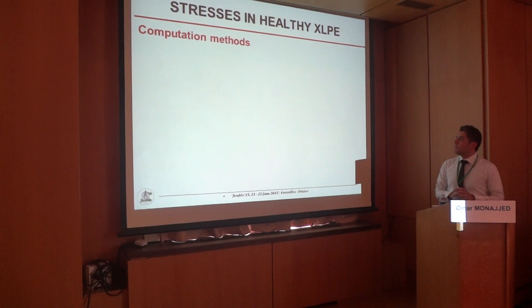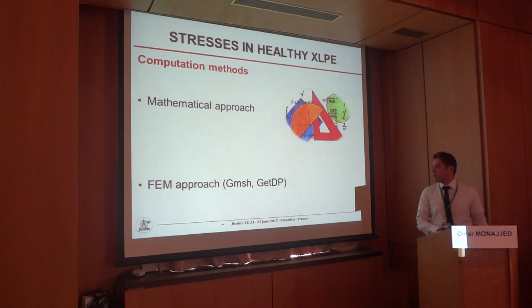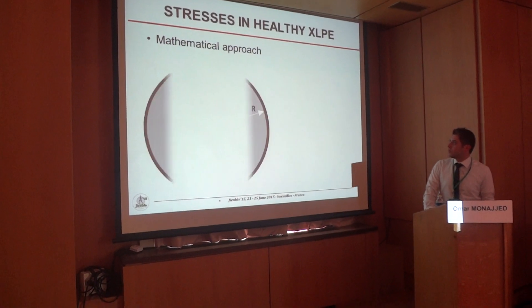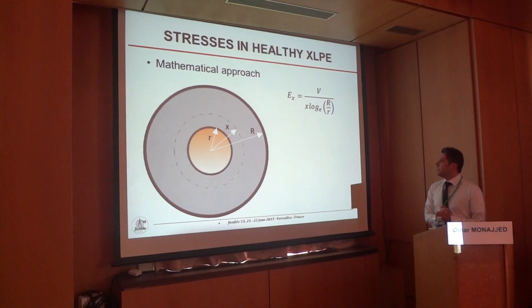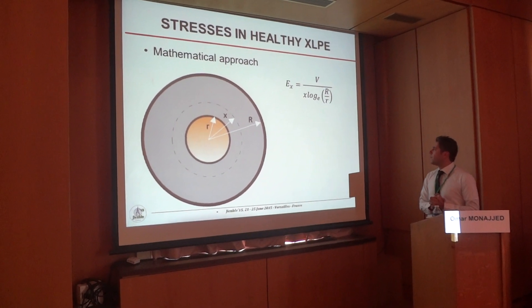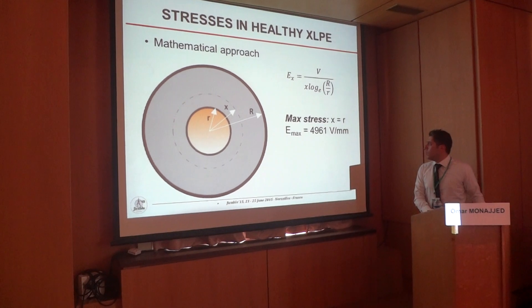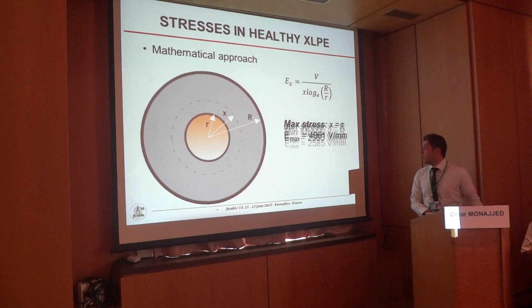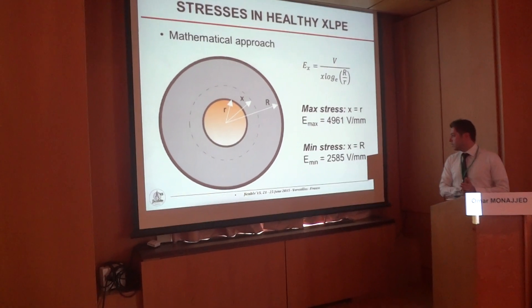For stresses in healthy XLPE, we have two computation methods. The first is the mathematical approach, and the second is the FEM approach using Gmsh and GetDP software. For the mathematical approach, we use the standard formula where V is the phase-to-ground voltage, x is the distance from the conductor to the desired point, R is the radius above insulation, and r is the radius under insulation. We get maximum stress when x equals r: E_max equals 4961 V/mm. And we get minimum stress when x equals R: E_min equals 2585 V/mm.